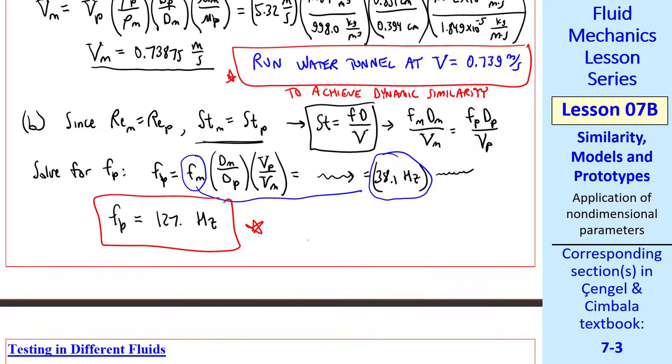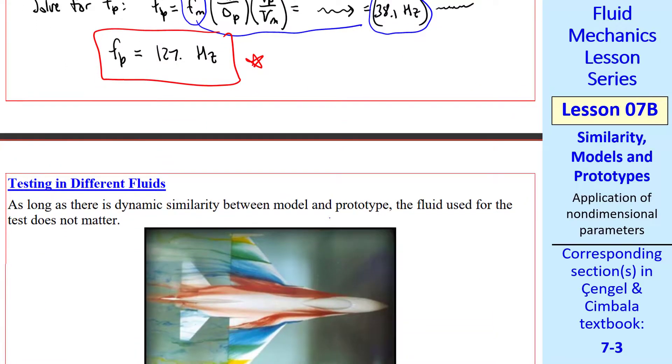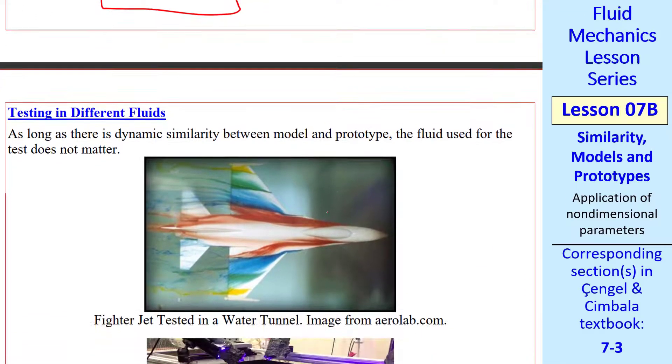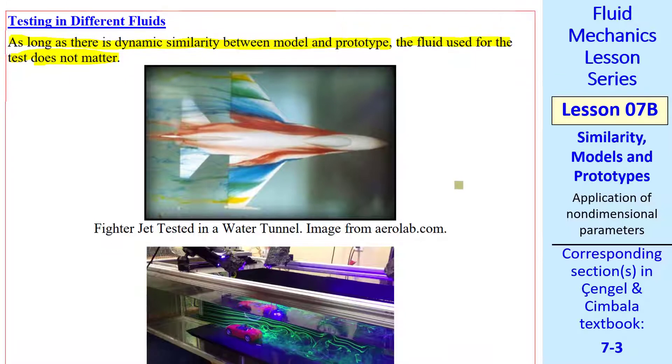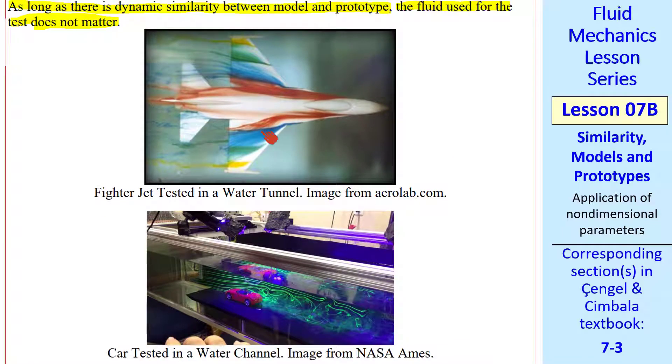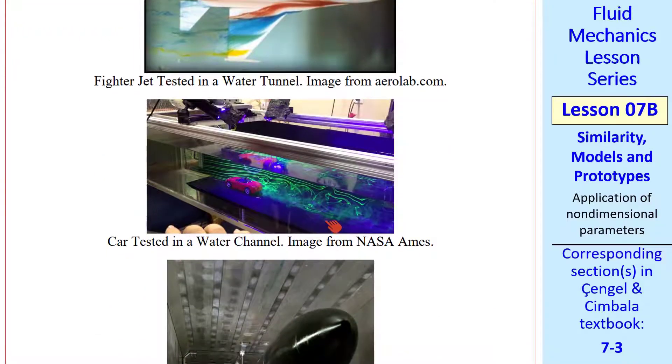You may have noticed that we tested in water, whereas our prototype was in air. I just want to mention this briefly. As long as there is dynamic similarity between model and prototype, the fluid used for the test does not matter. Here are some examples. Here's a fighter jet being tested in a water tunnel, which enables us to use dye streaks. Here's a car being tested in a water tunnel with fluorescent dye, visualizing the turbulent wake.